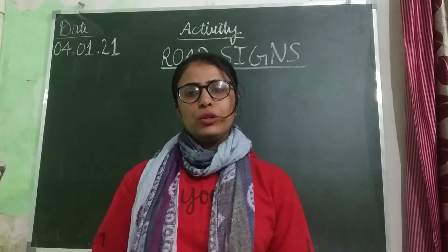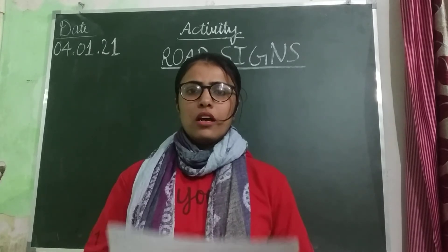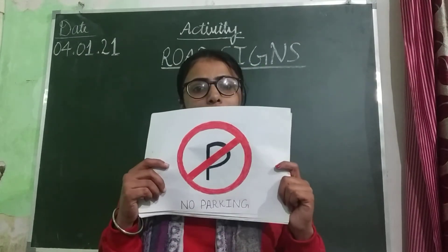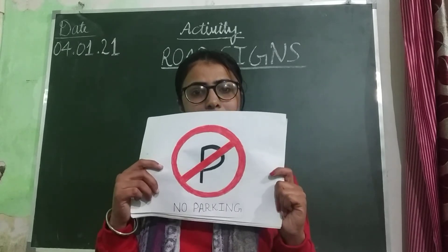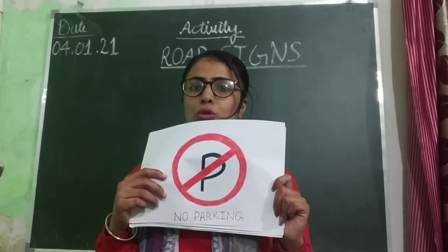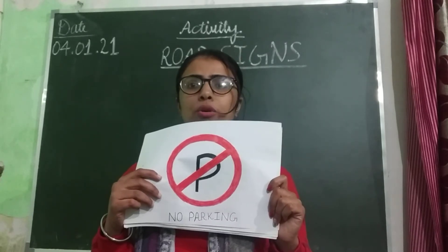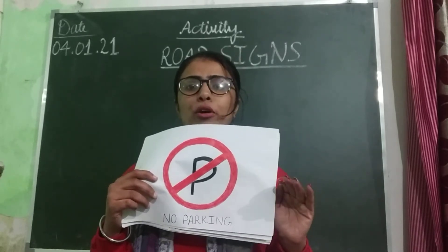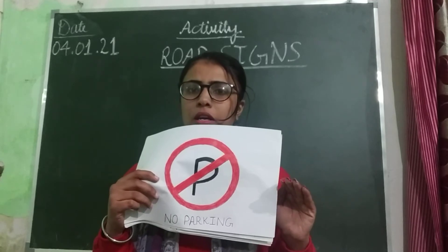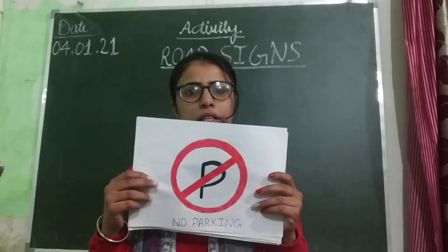Now I am going to discuss our four road signs. Our first road sign is no parking. The no parking sign indicates that you are not allowed to park your vehicle at that place. You can stop your vehicle to drop someone or to pick someone, but you should not park your vehicle for a long time.